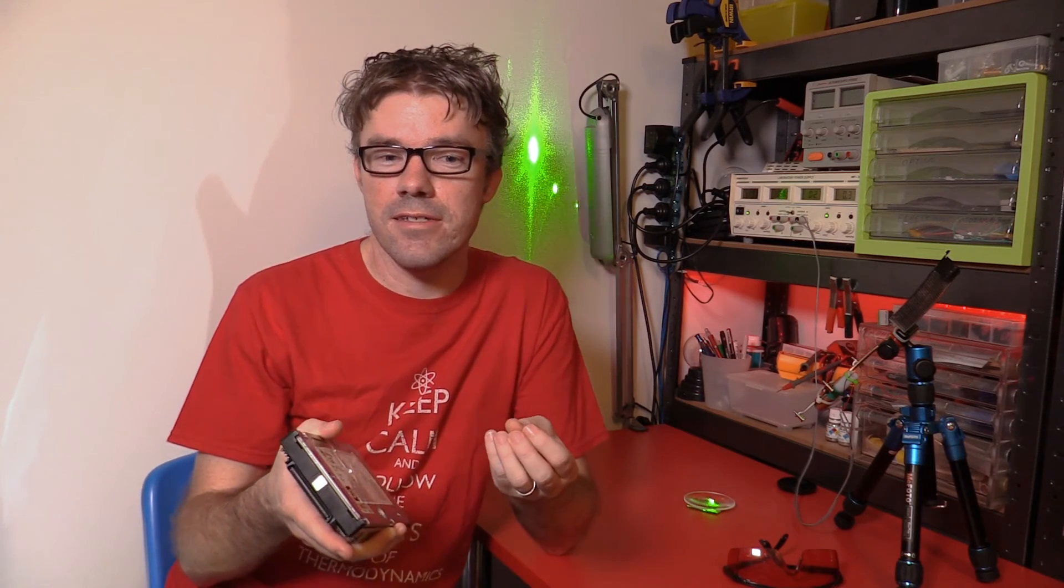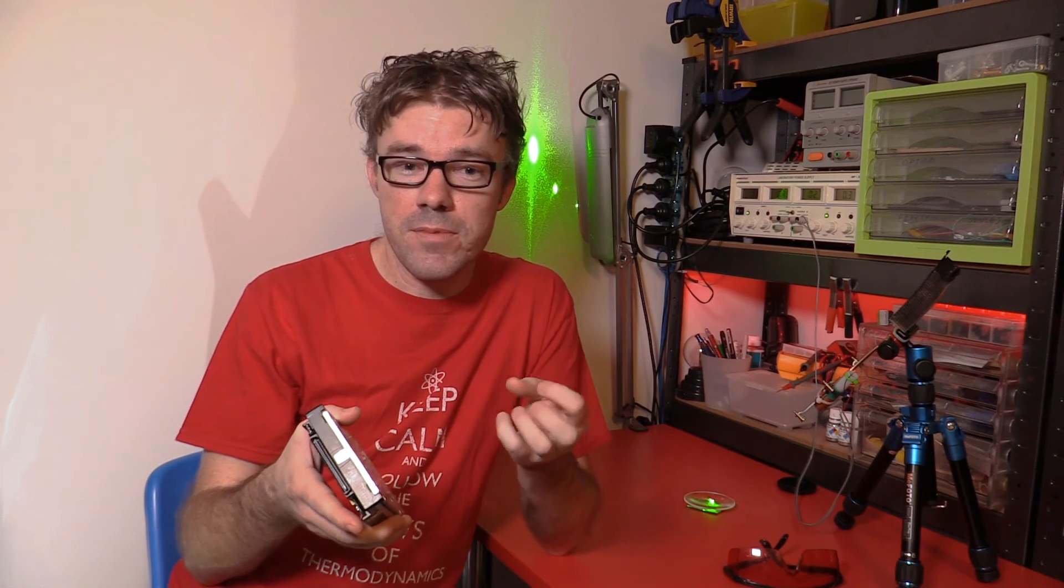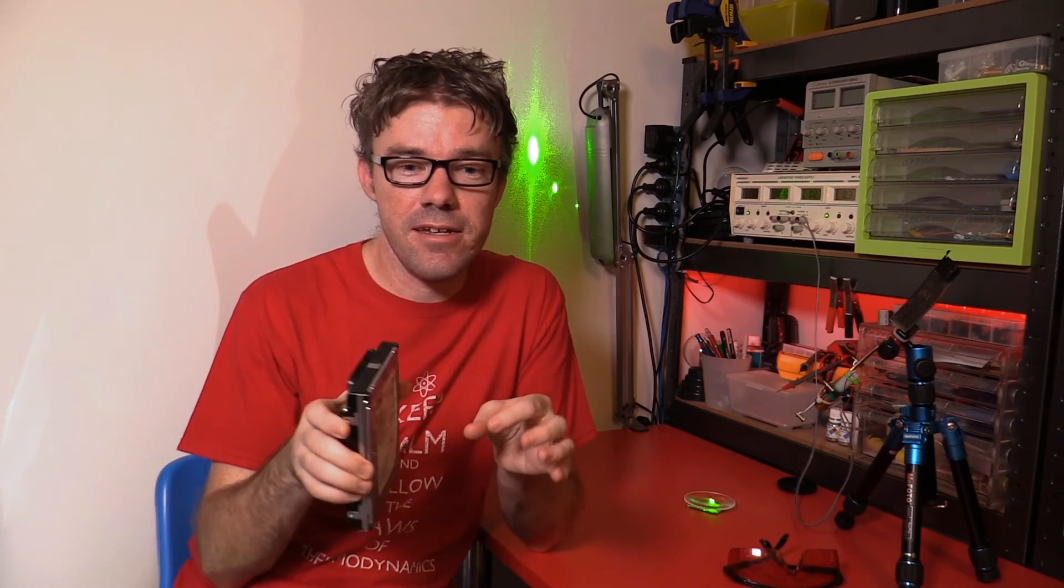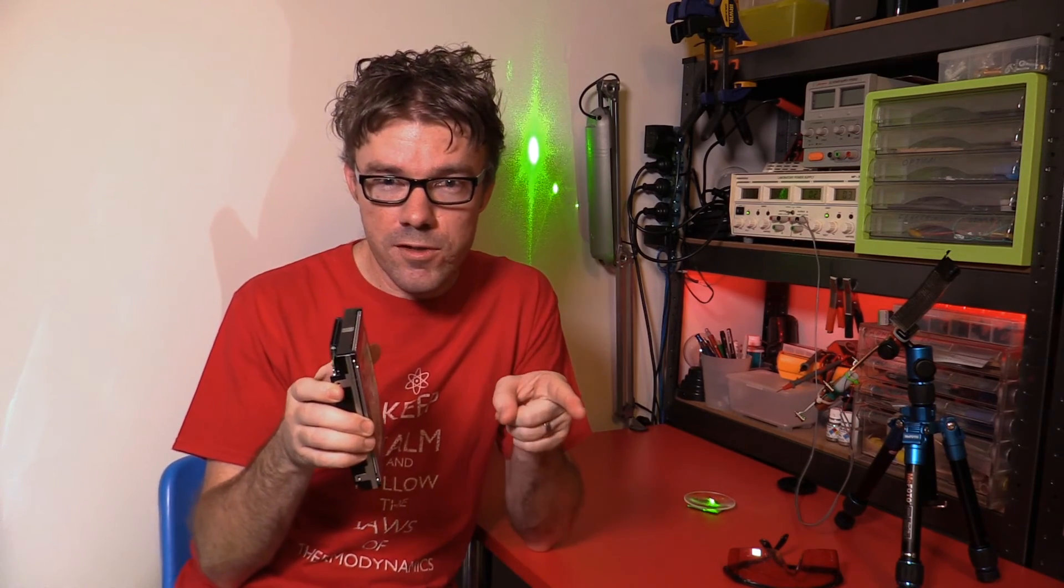So to put that in context, 0.3 femtoseconds is shorter than 1 quadrillionth of a second. So 1 quadrillion is 10 to the power of 15, it's a thousand trillion. Assuming that the reflection delay time was 0.3 femtoseconds, if we apply the mathematics backwards to the hard drive, the hard drive would have to be rotating at a speed of 183 billion times per second, just to deflect the beam across the room 2mm.